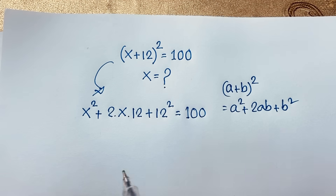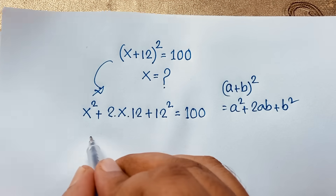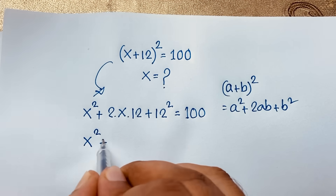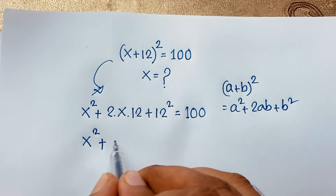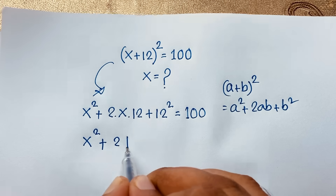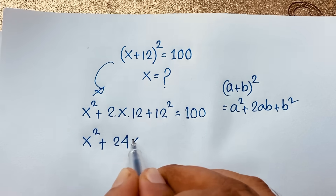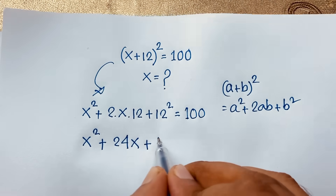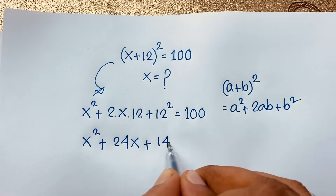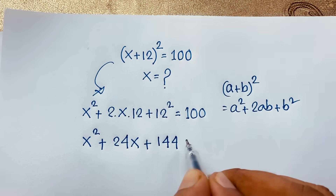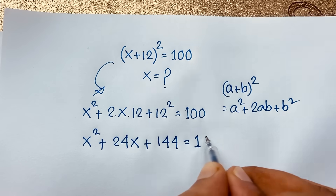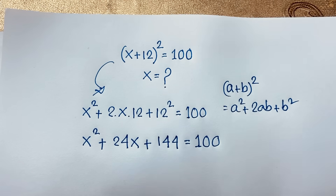Now we know that this expression will be x² + 2 times 12, which is 24x, plus 12², which is 144, is equal to 100. I solve this question step by step.